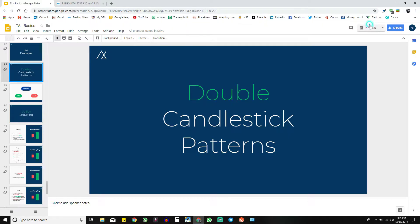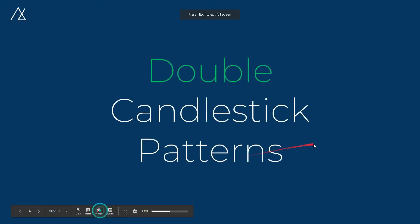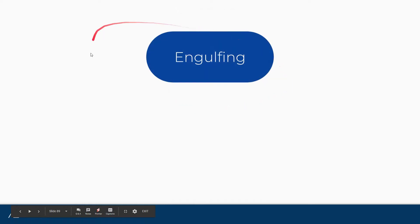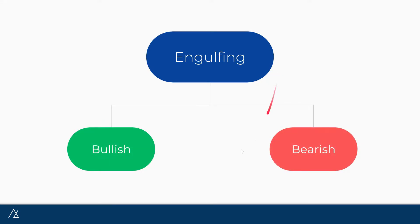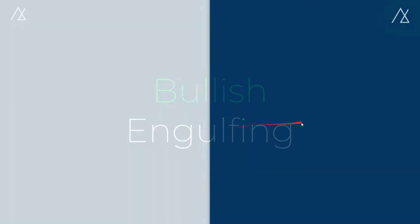Let's get started with today's agenda. We are starting with double candlestick patterns. The first one is the engulfing pattern, and today we are going to see the engulfing pattern. It is broadly divided into two parts: the first is bullish and the other is bearish.